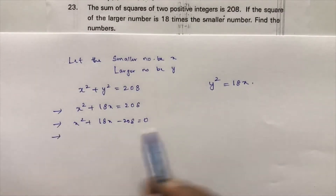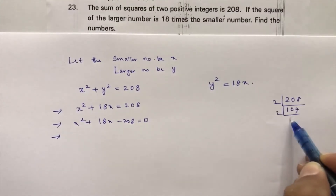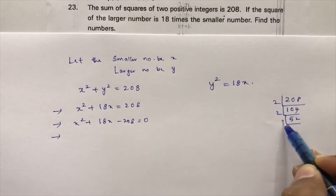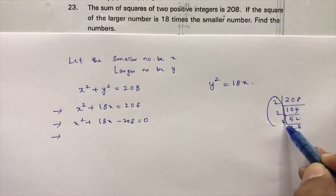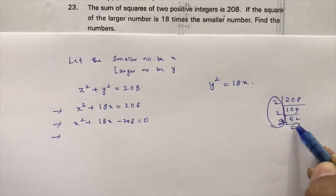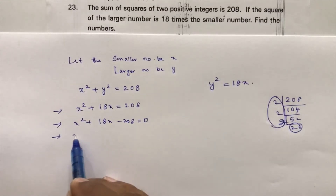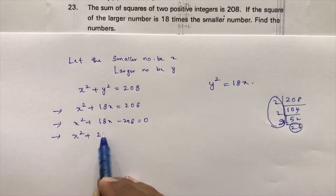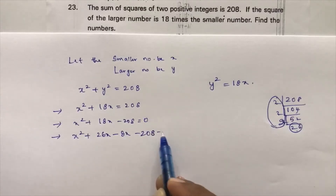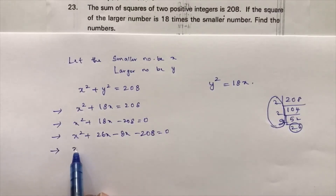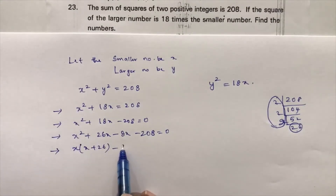To factorize, we need factors of 208 that differ by 18. Breaking down 208: 2 times 104, 2 times 52, 2 times 26 — giving us 8 and 26. Since 26 minus 8 equals 18, we write x squared plus 26x minus 8x minus 208 equals 0.